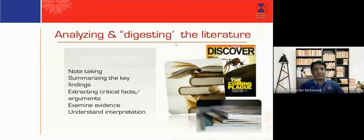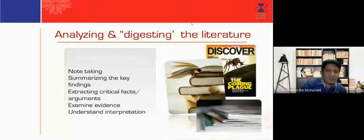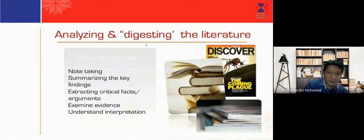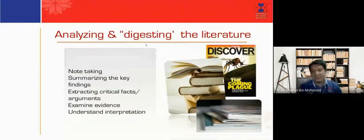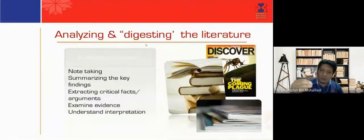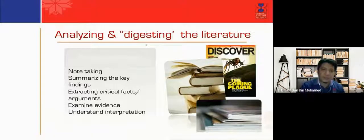When analyzing and digesting the literature, first take notes and summarize the key findings or keywords using Mendeley. After including all articles in Mendeley, you can summarize by finding key words and key findings to determine which articles are suitable for citation in each section. Then critically accept the key facts and arguments as evidence, and lastly understand the interpretation of each article.